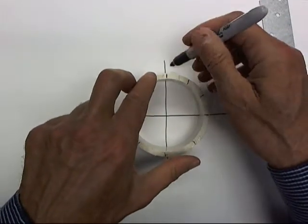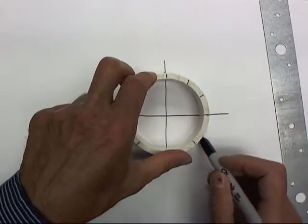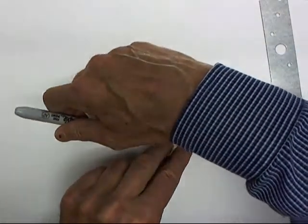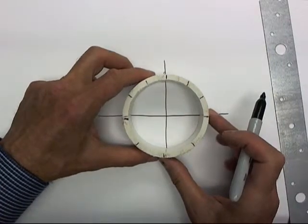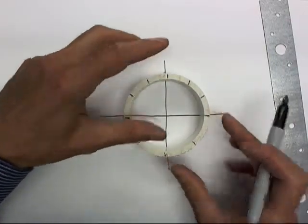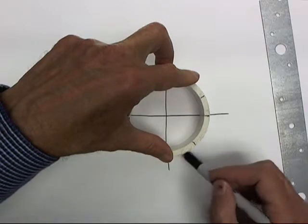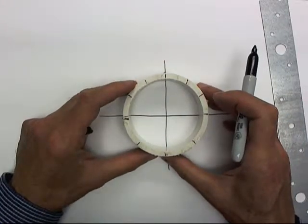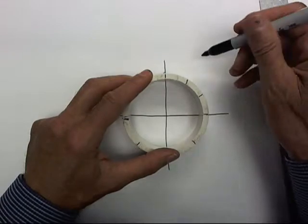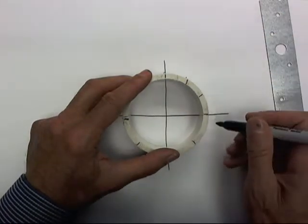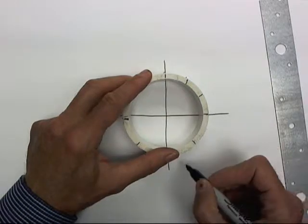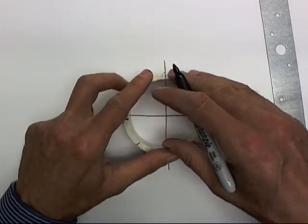Now what I'm going to do is go ahead and trace the circle. It would have been better if I hadn't bumped it, but we'll move on. And then I'm going to put marks at the various marked positions around the circle.